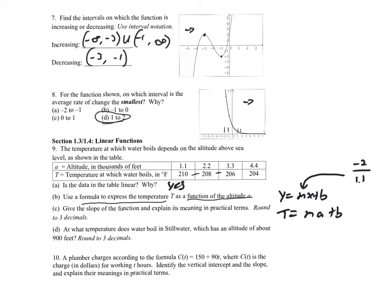We need to find b. We know T = (negative 2 / 1.1) · a + b. To find b, pick any point from the table and plug in T and a. Plugging in a = 1.1 and T = 210: the 1.1 cancels, leaving 210 = negative 2 + b, so b = 212.